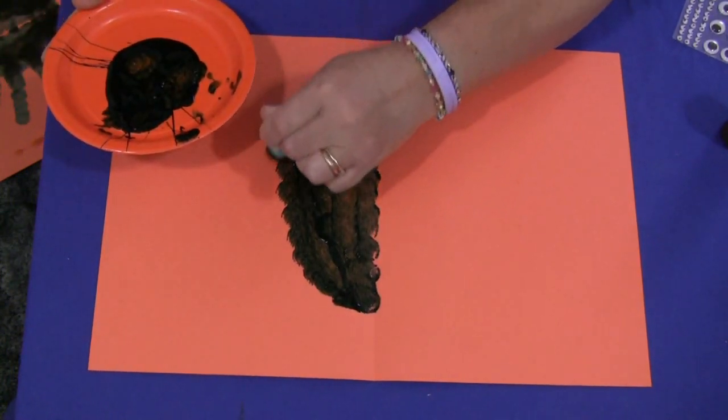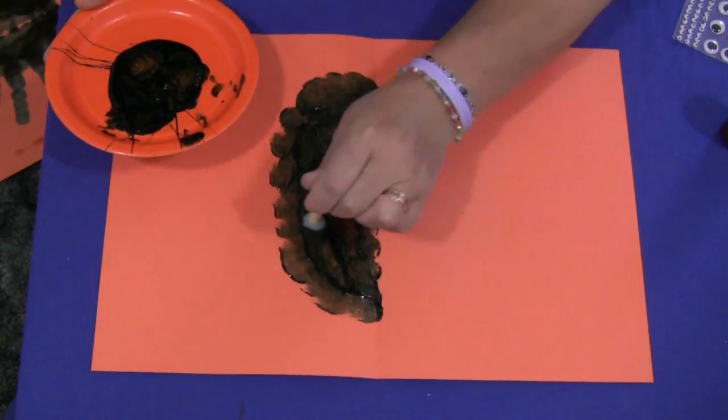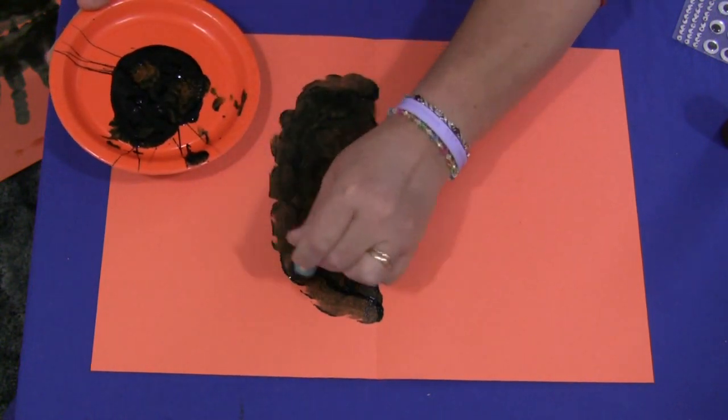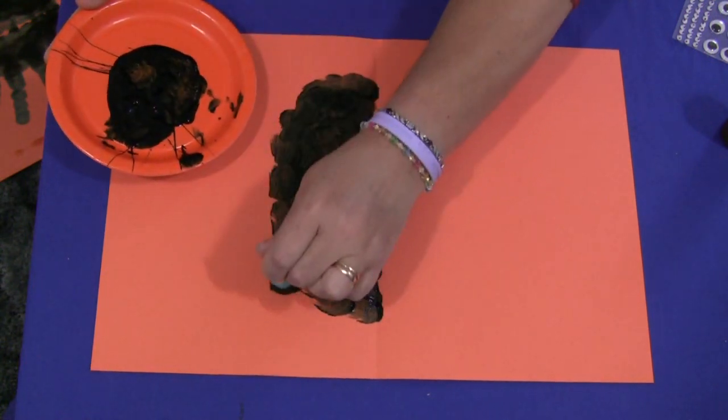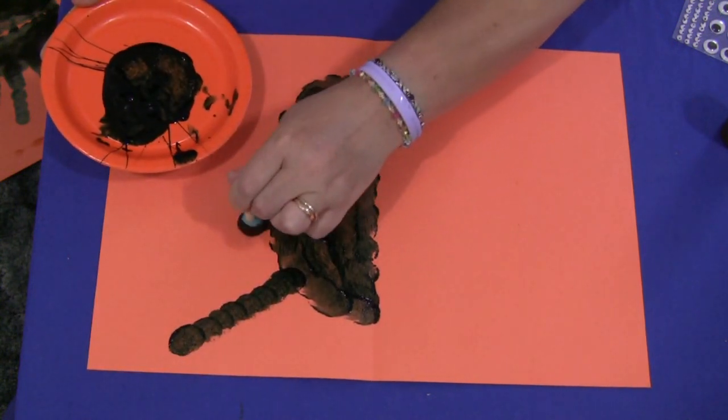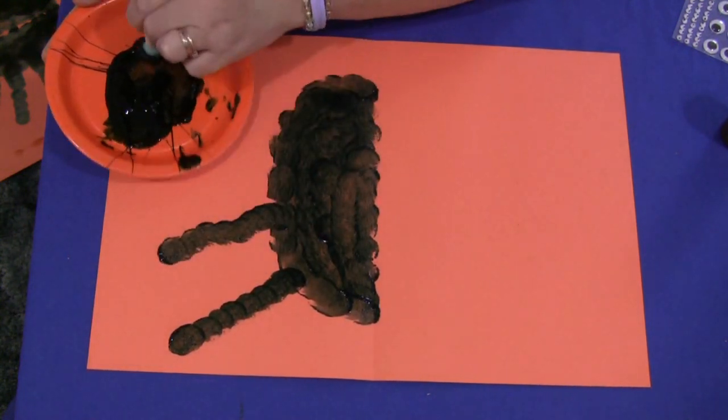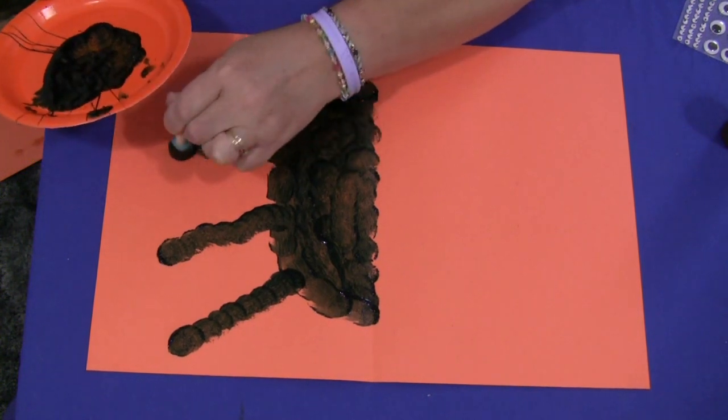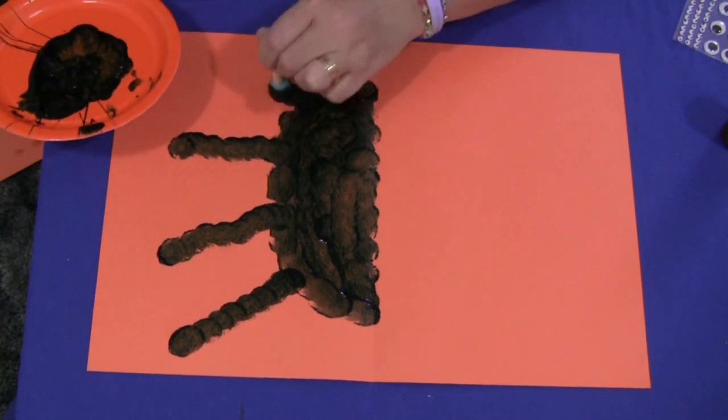So again you make half the body on here, just kind of like a round or oval shape. And then you're going to make four legs. Right here. Put the fourth one here.